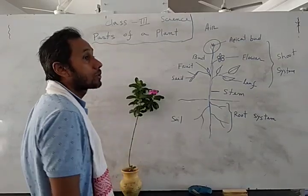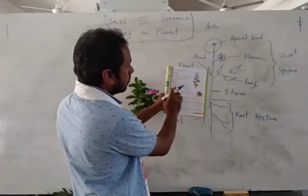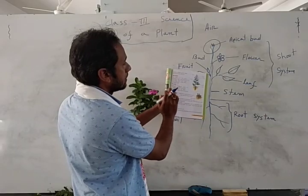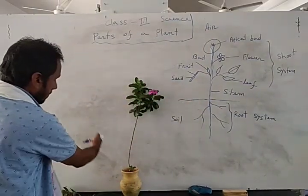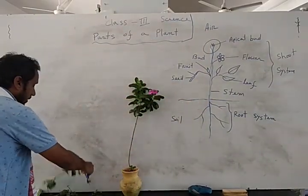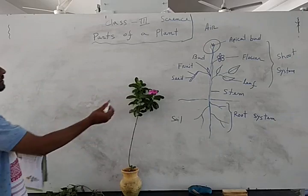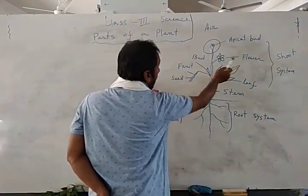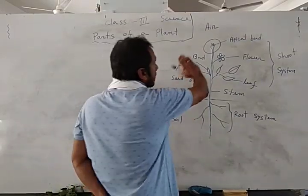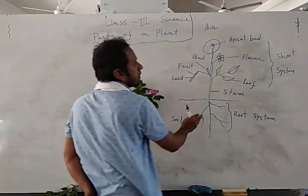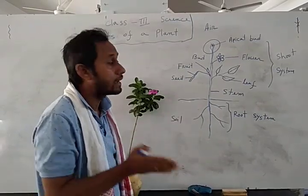So now we have two systems: one is the root system and another is the shoot system. Inside the shoot system — the part above the ground — the shoot system contains stem, leaf, flower, apical bud, fruit, and inside the fruit a seed is present. If you are asked what the shoot system is: it is the portion of the plant that grows above the soil.